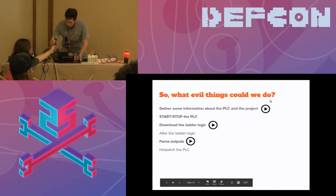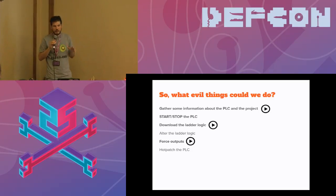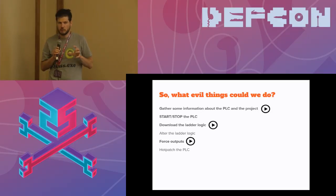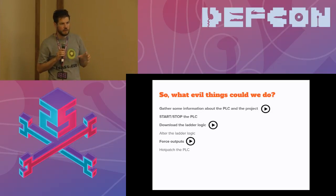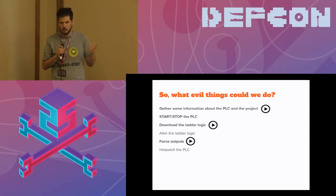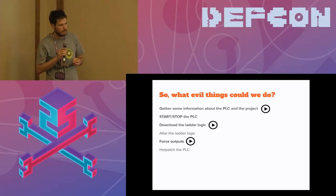Those were things that already existed, but since this is DEF CON, I wanted to show something new. One feature that was really interesting to me is what we call 'forcing the outputs.' If you've worked with PLCs, forcing outputs is used during development — it allows you to bypass the ladder logic of the PLC and directly set the outputs to on, off, or any arbitrary value. This helps with debugging, especially when working with other entities.